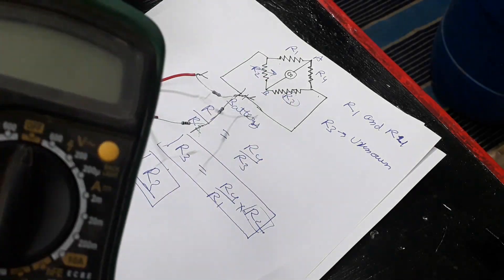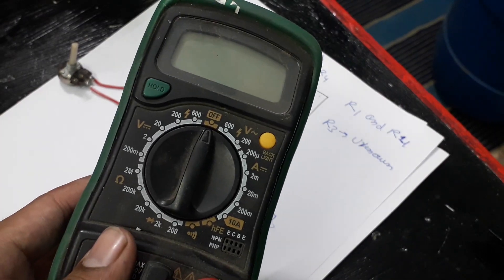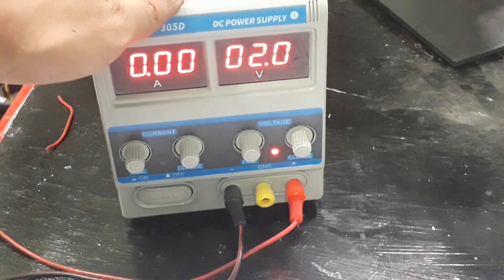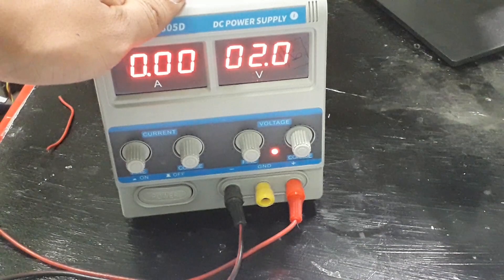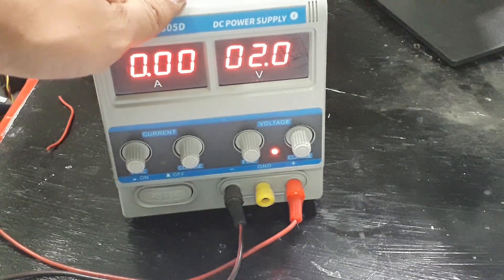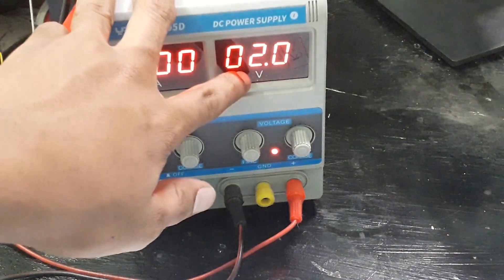Instead of a galvanometer, I will use the multimeter to check the current. I will use my lab bench power supply to supply voltage to the circuit, and I will set the voltage to 2 volts.